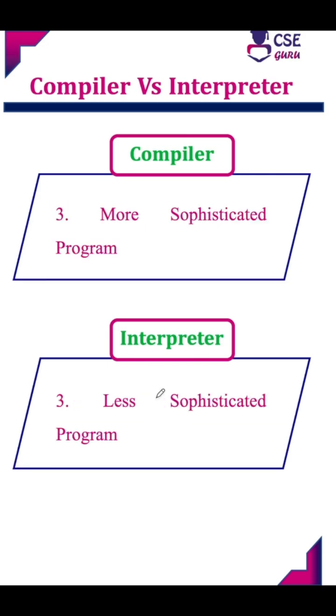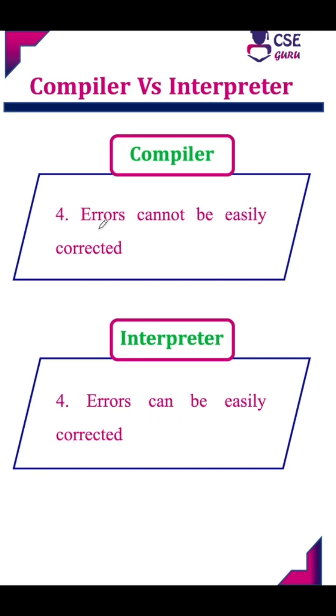For a compiler, since it has to process the complete source program, it requires a more sophisticated program to develop. An interpreter does line-by-line translation and requires only a less sophisticated program to develop.